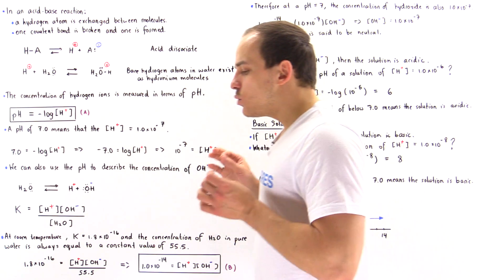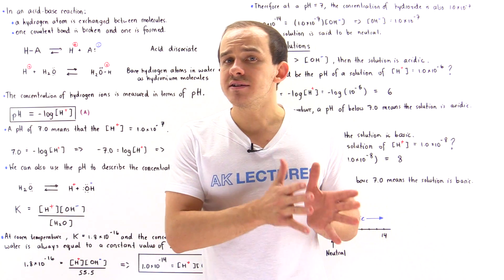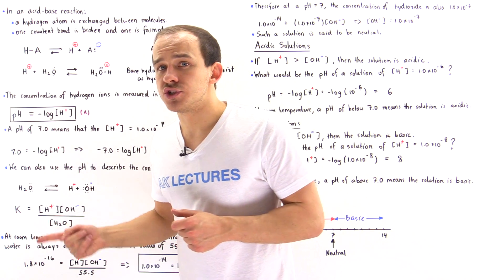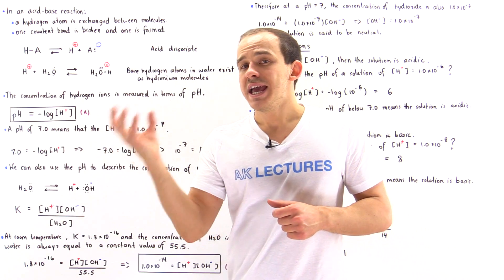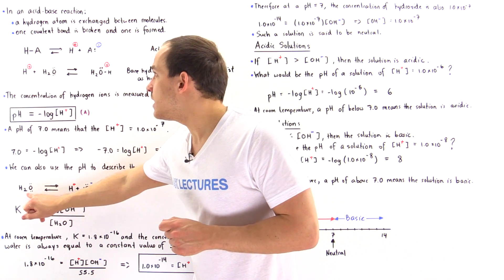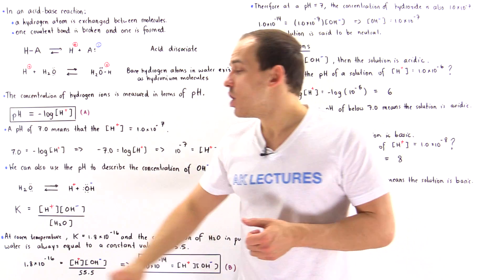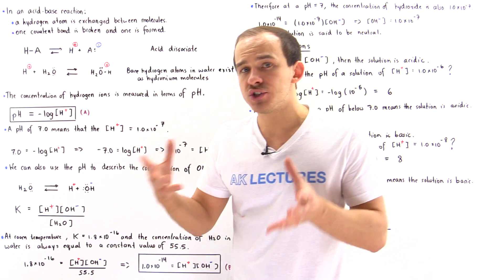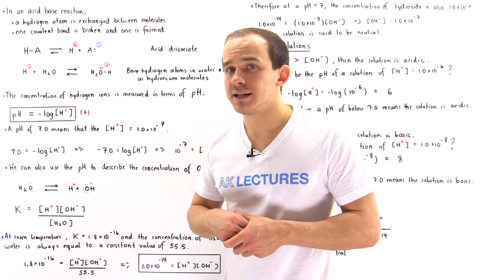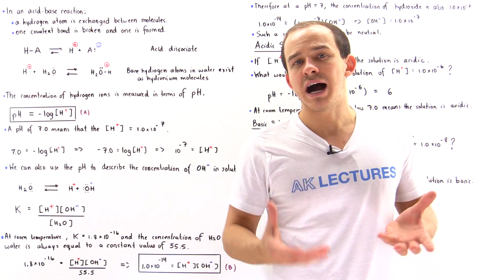By knowing the hydrogen ion concentration, we can also determine the hydroxide concentration in solution. Even in a beaker of pure water, water molecules will dissociate by the same equation. Even though water is a weak acid, water molecules will still dissociate into an H+ ion and a hydroxide ion. Using basic chemistry, we can set up the equation for the equilibrium constant K.